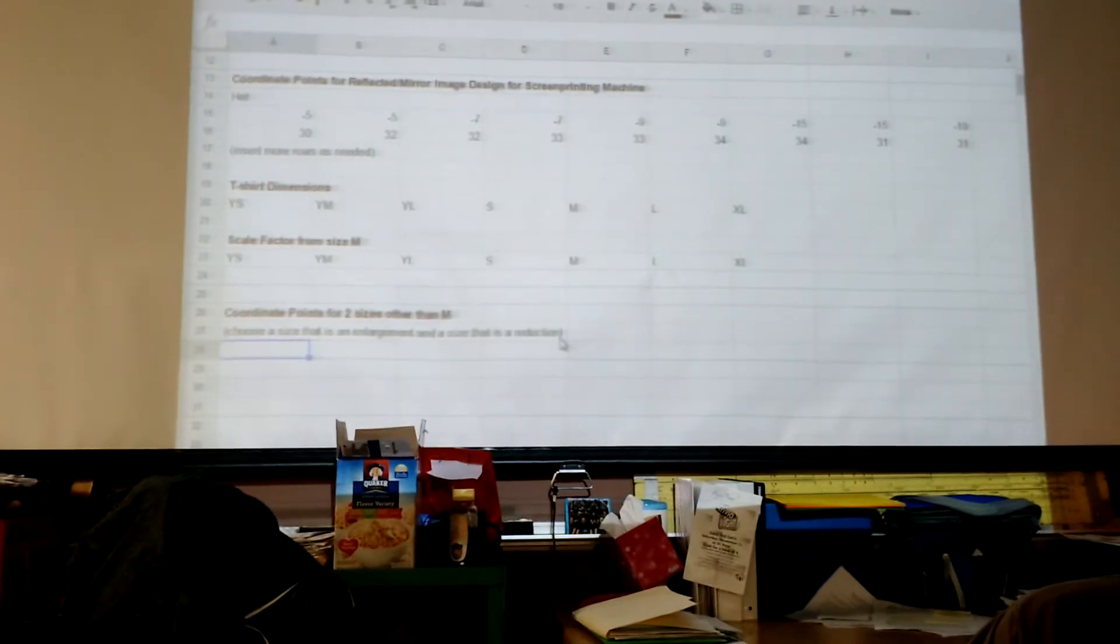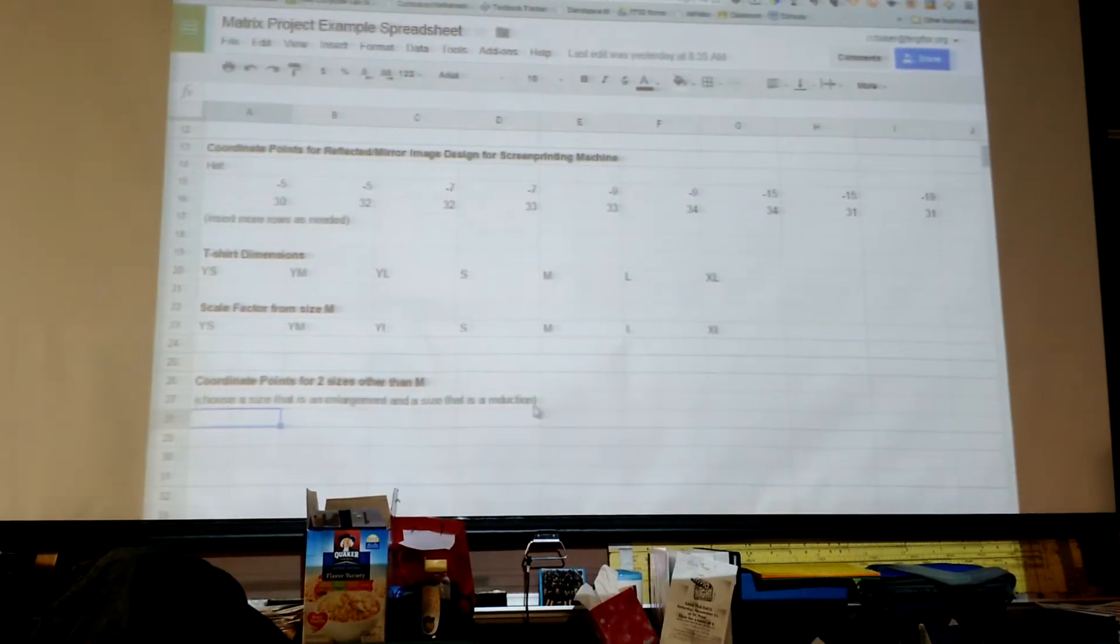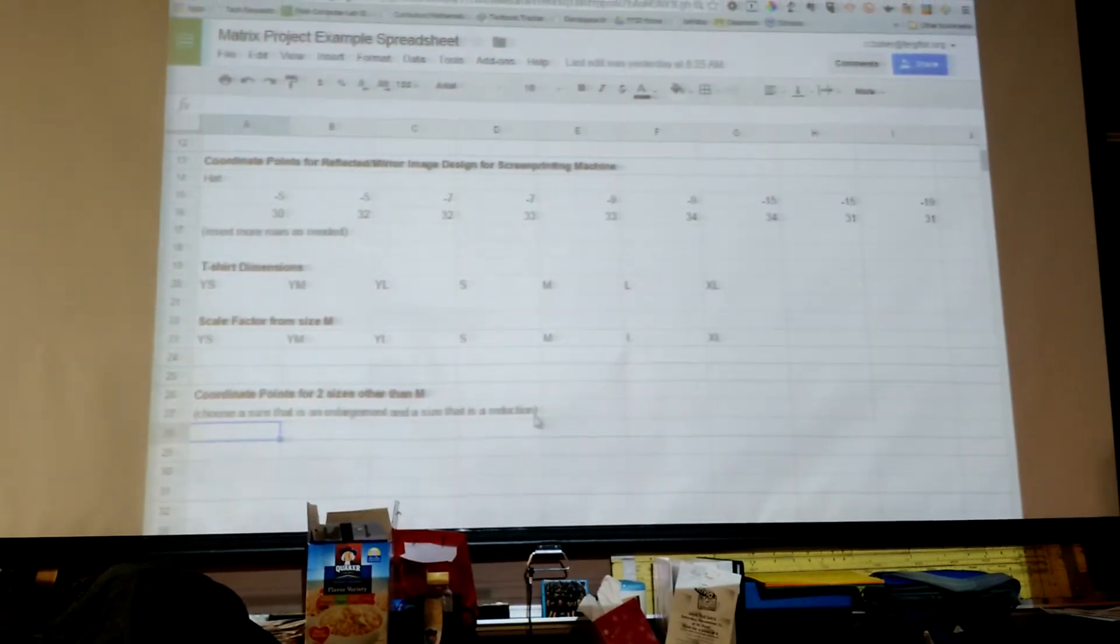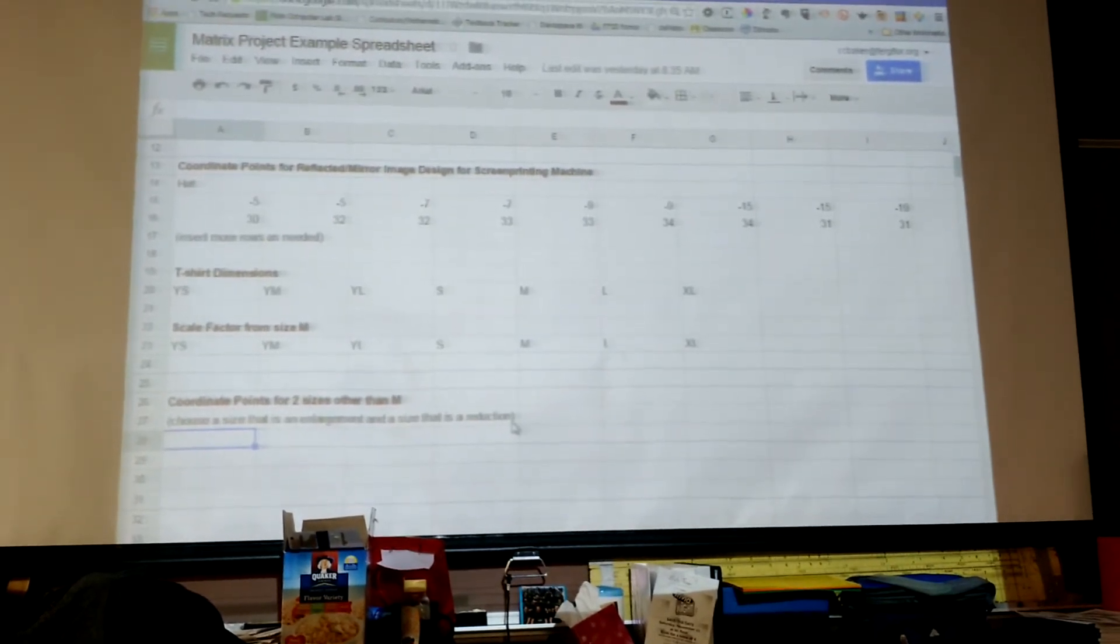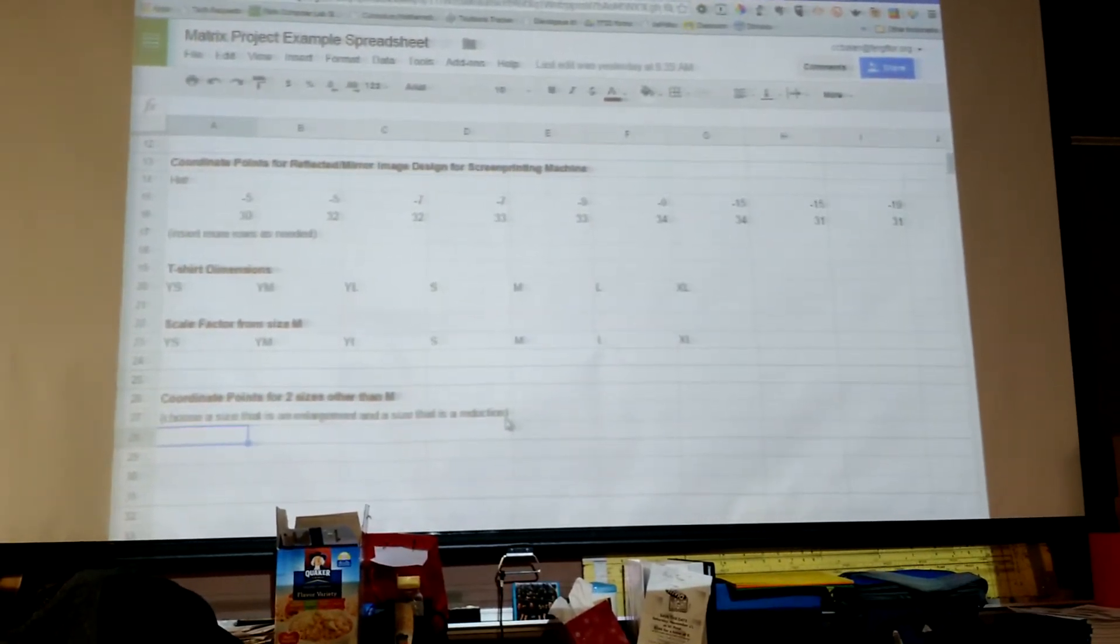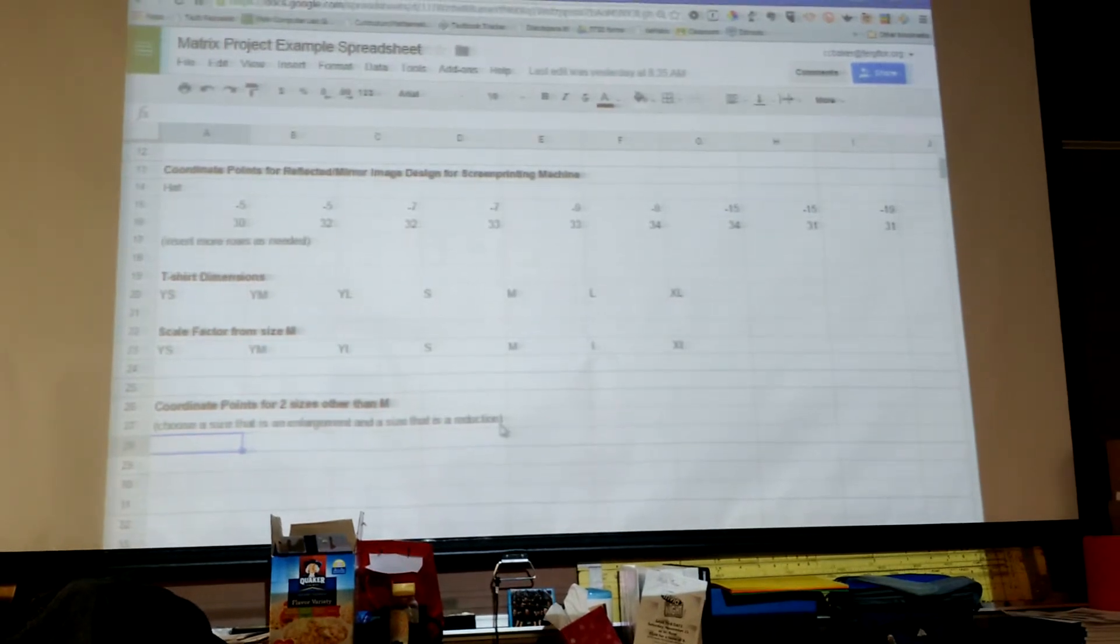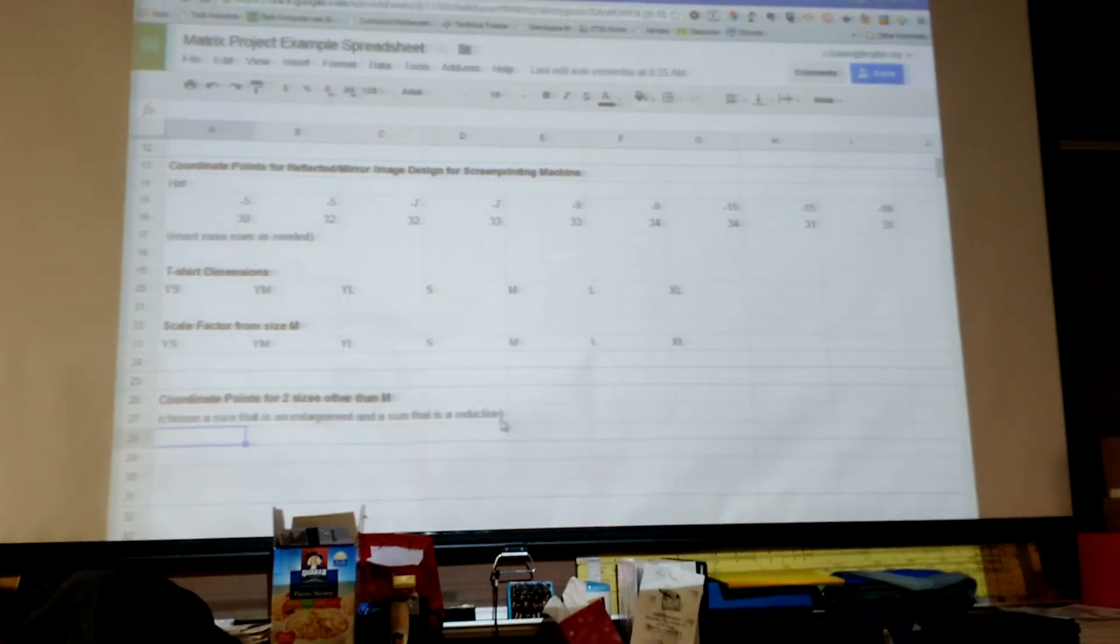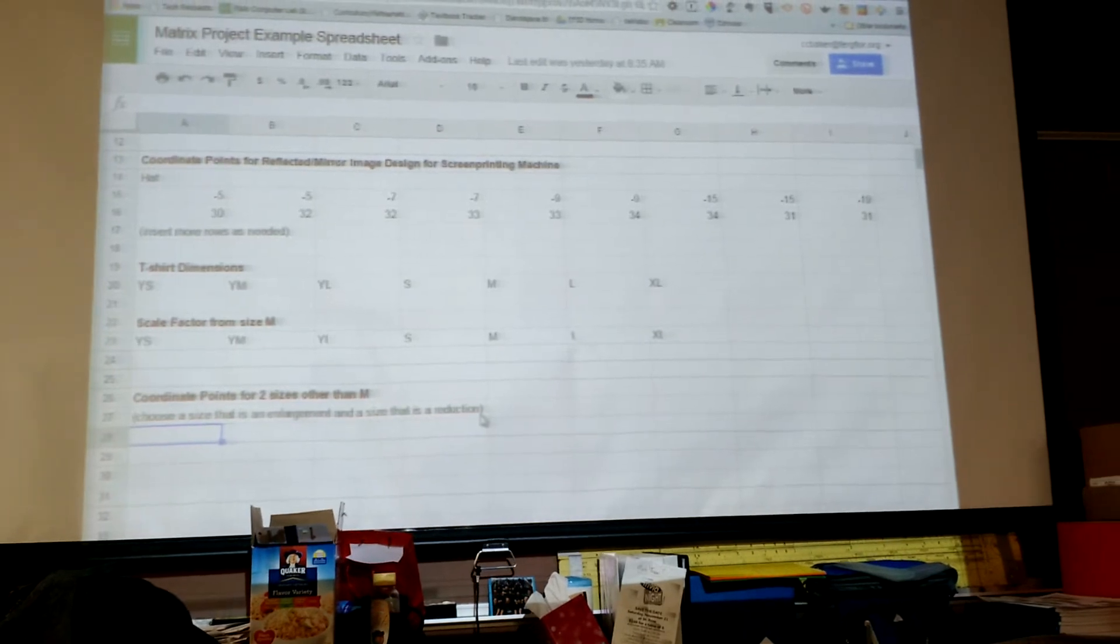You could do small, you could do youth large, youth medium, youth small, any of those. For the enlargements, you could just do large or extra large, those would be your only two choices. Whichever one you do, I don't care, just choose two of them.